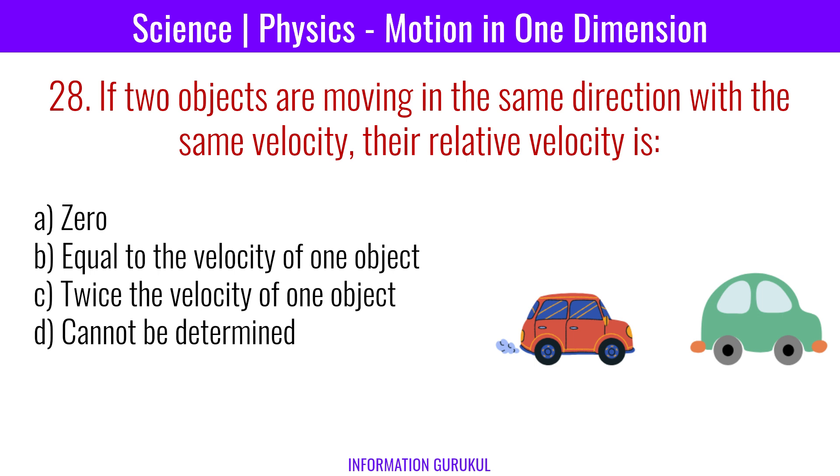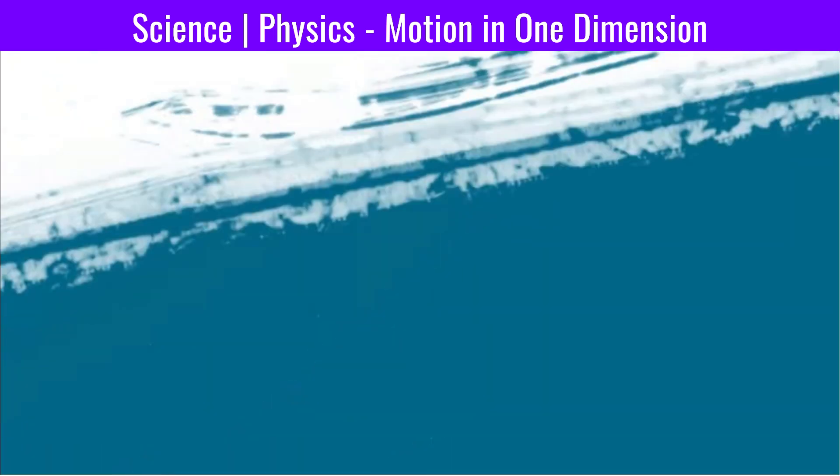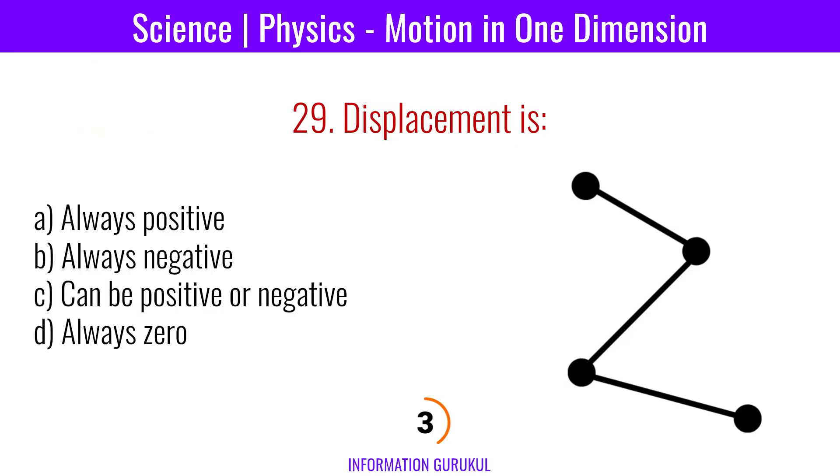If two objects are moving in the same direction with the same velocity, their relative velocity is zero. Displacement can be positive or negative.